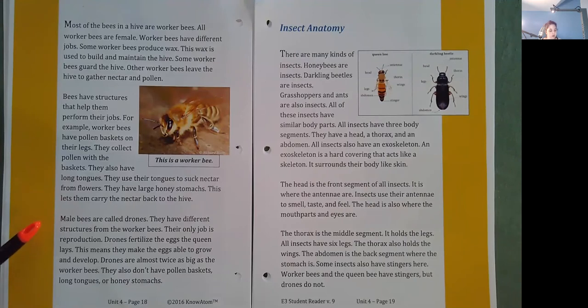Male bees are called drones. They have different structures from the worker bees. Their only job is reproduction. Drones fertilize the eggs the queen lays. This means they make the eggs able to grow and develop. Drones are almost twice as big as the worker bees. They also don't have pollen baskets, long tongues, or honey stomachs.